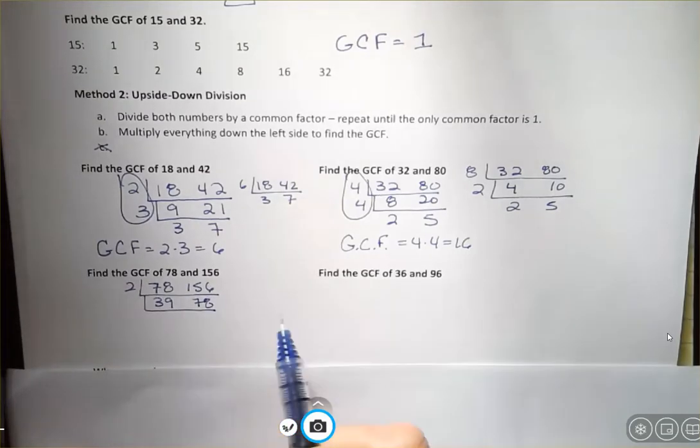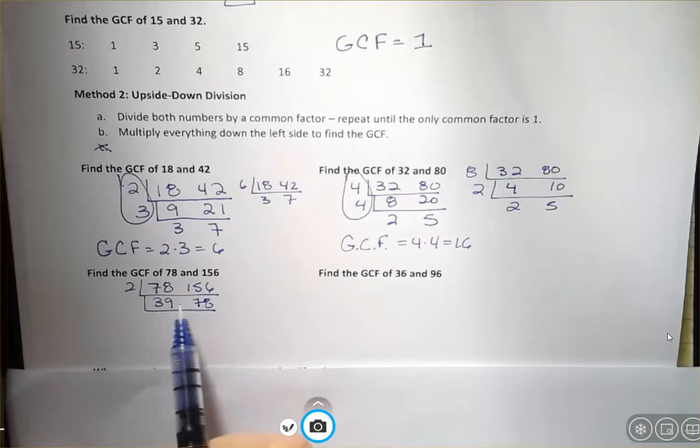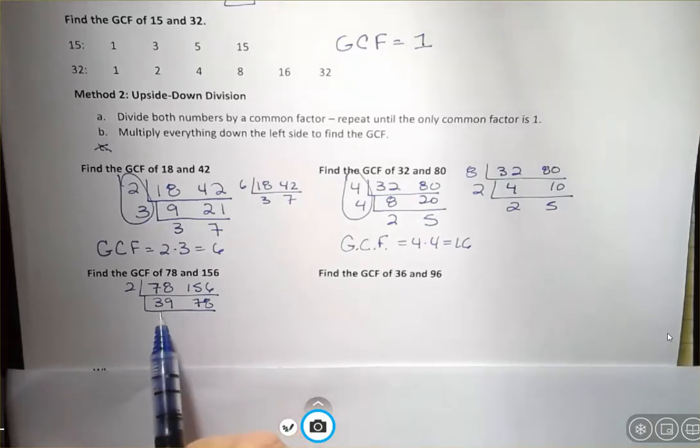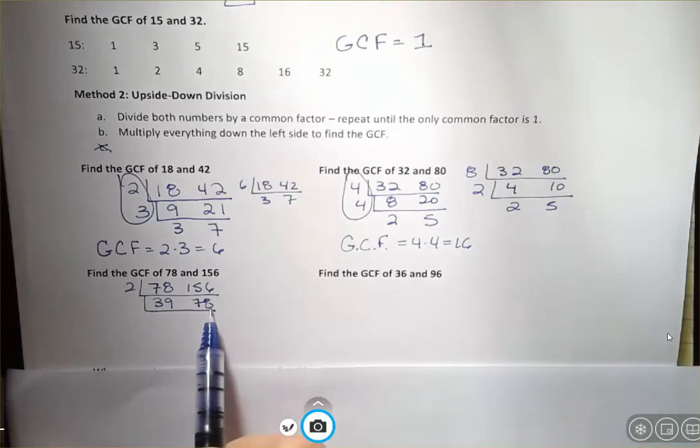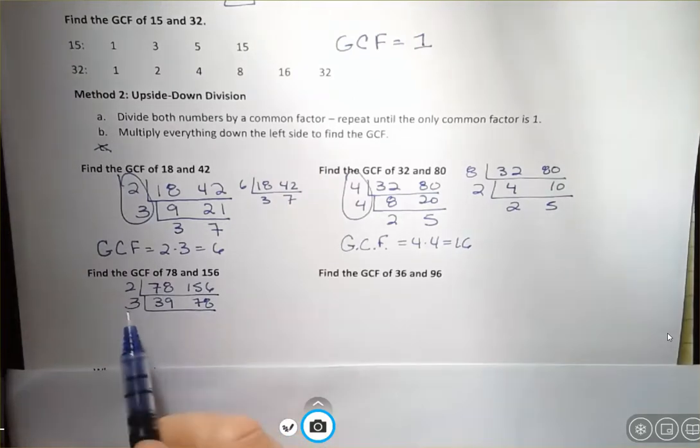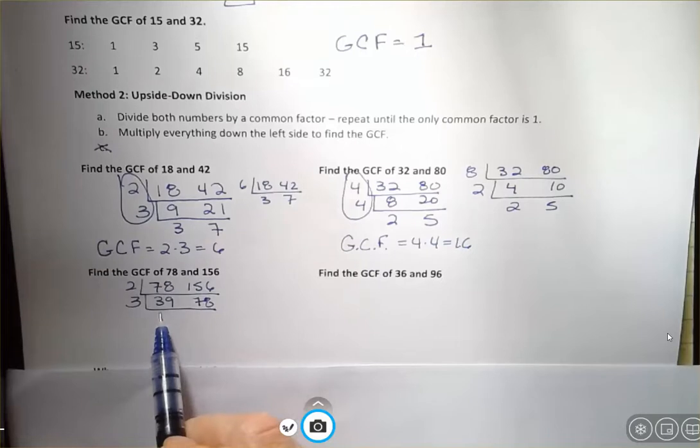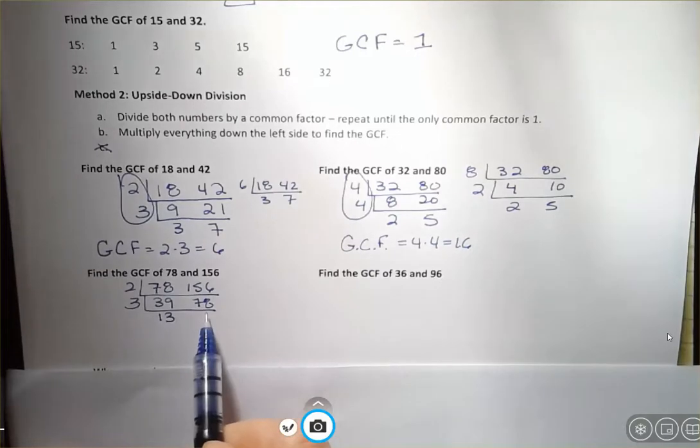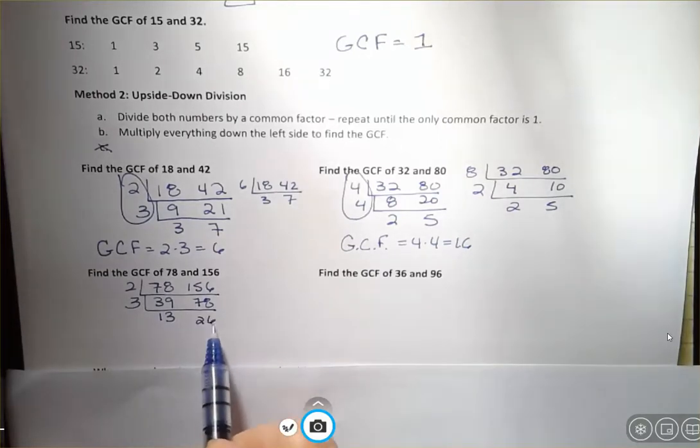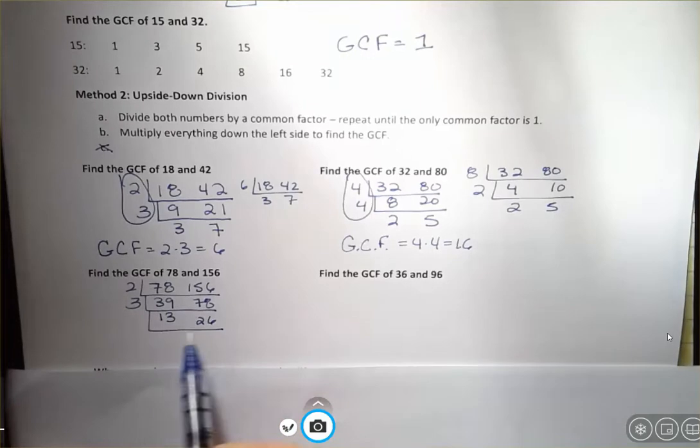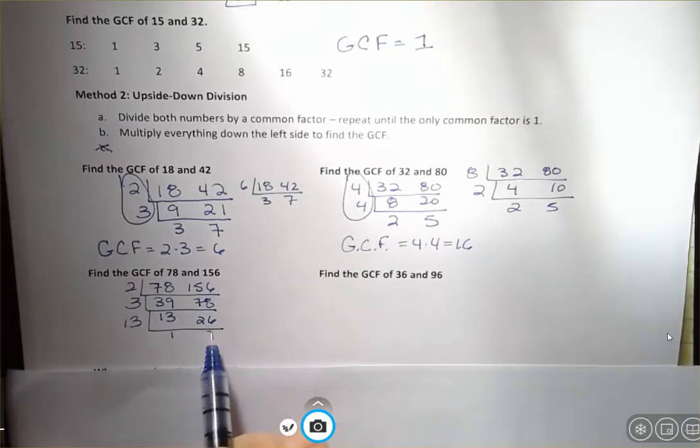And then maybe I'd say, what goes into these two? And you could use your rules of divisibility to help you, or you can use your calculator. But these look like they're both divisible by three. Nine plus three is 12. 12 is divisible by three, so 39 is. Seven plus eight is 15. 15 is divisible by three. That's how I can tell with the threes. And three goes into 39 13 times and into 78 26 times. And then I could finally see, 13 goes into itself once and it goes into 26 twice.